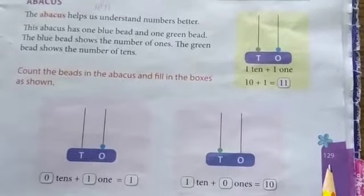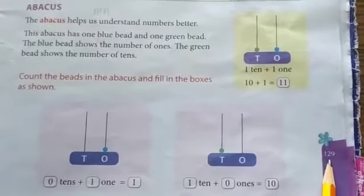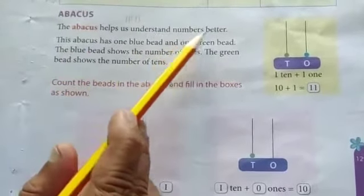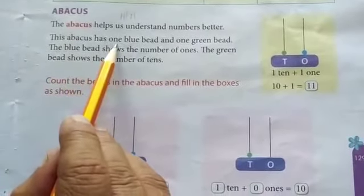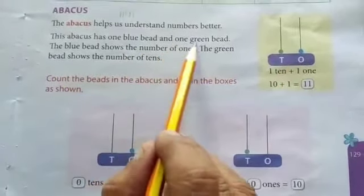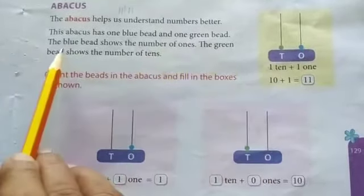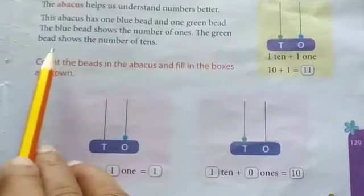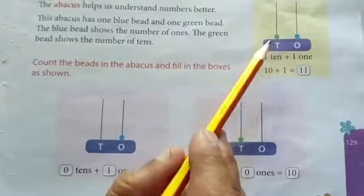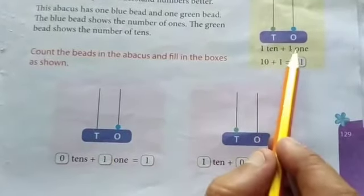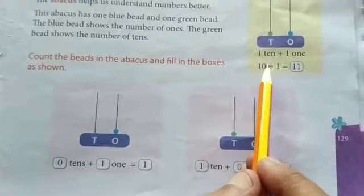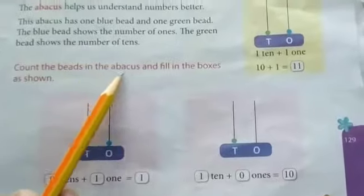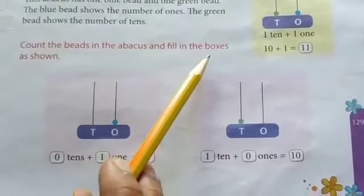Look here, children. Please take page number one hundred and twenty-nine — Abacus. The Abacus helps us understand numbers better. This Abacus has one blue bead and one green bead. The blue bead shows the number of tens. One ten plus one one is equal to eleven. Count the beads in the Abacus and fill in the boxes as shown.